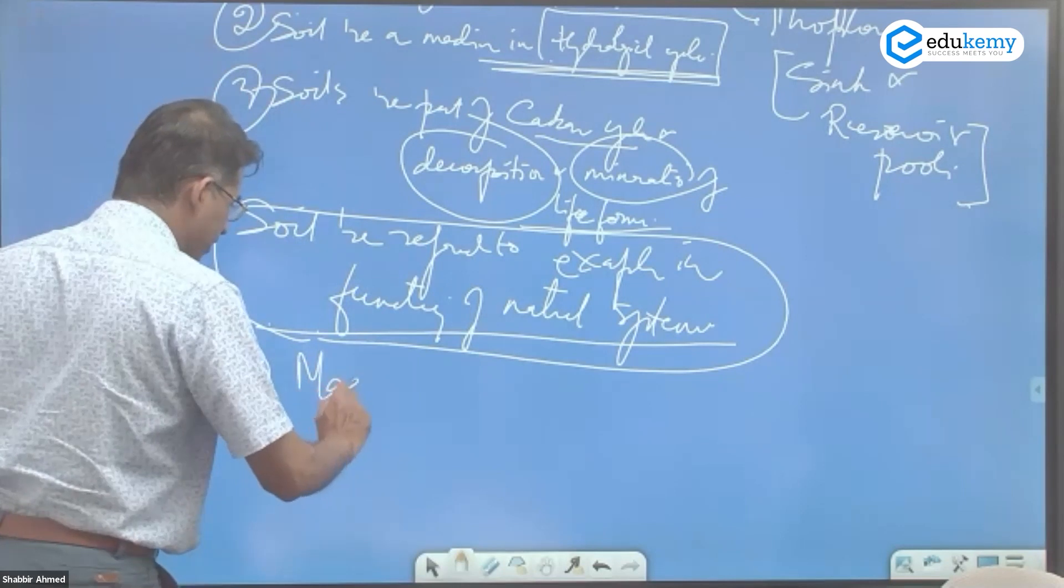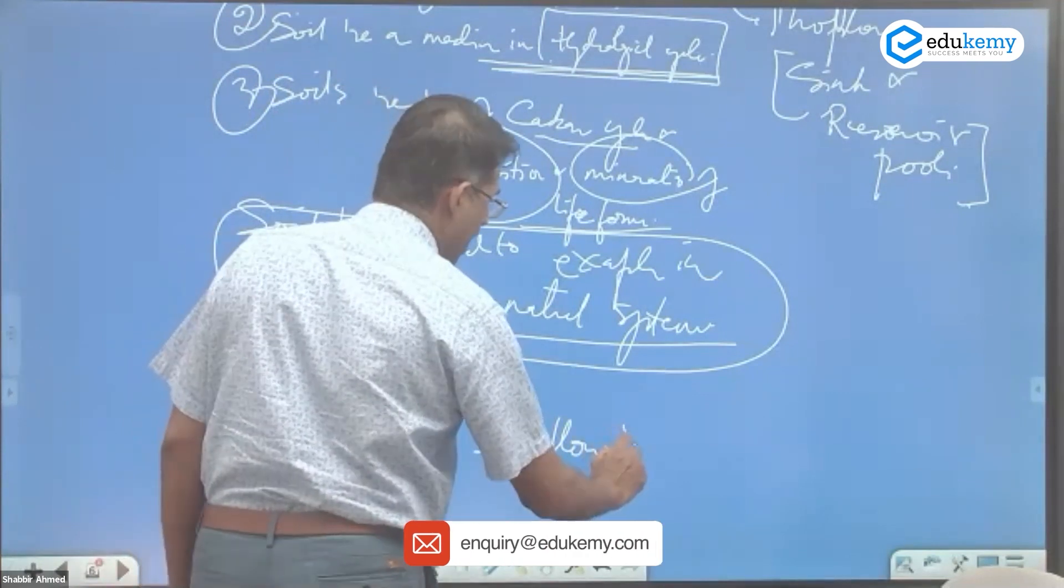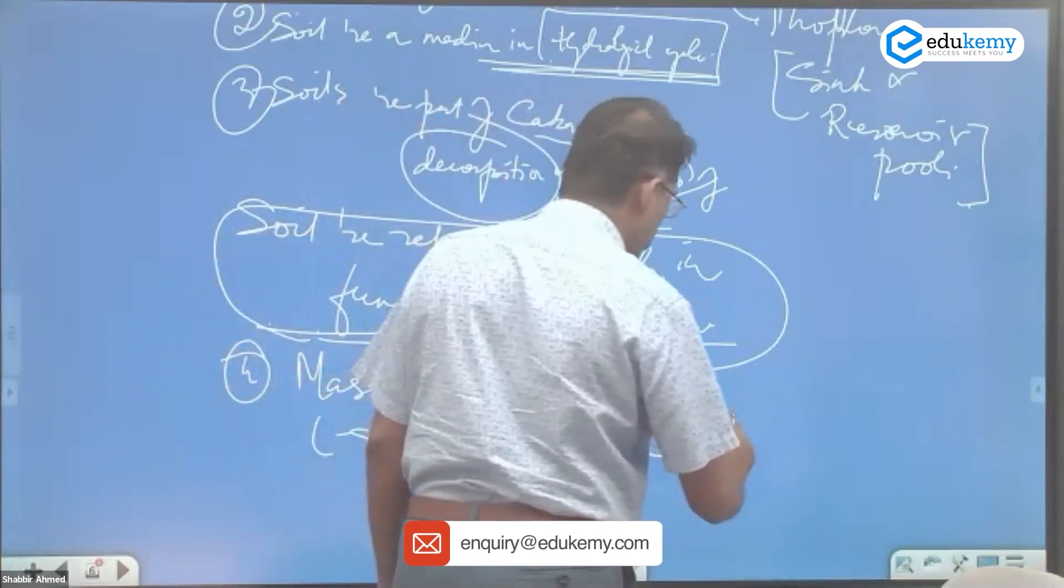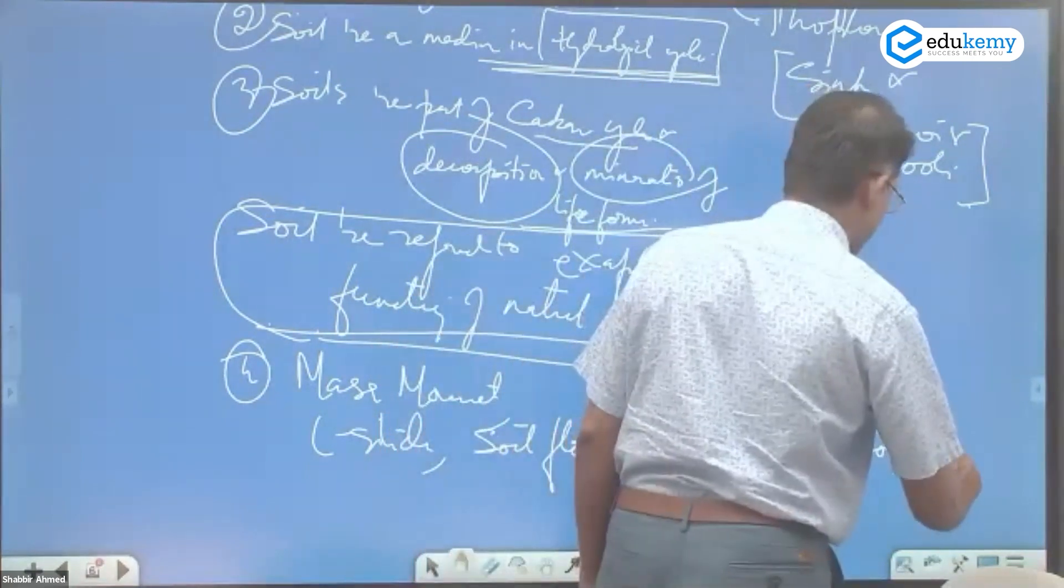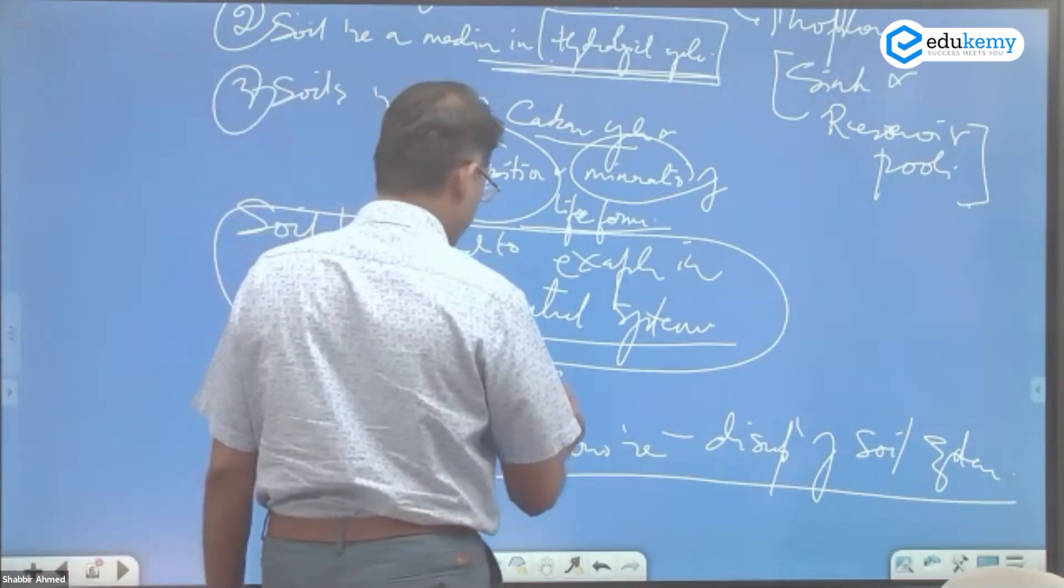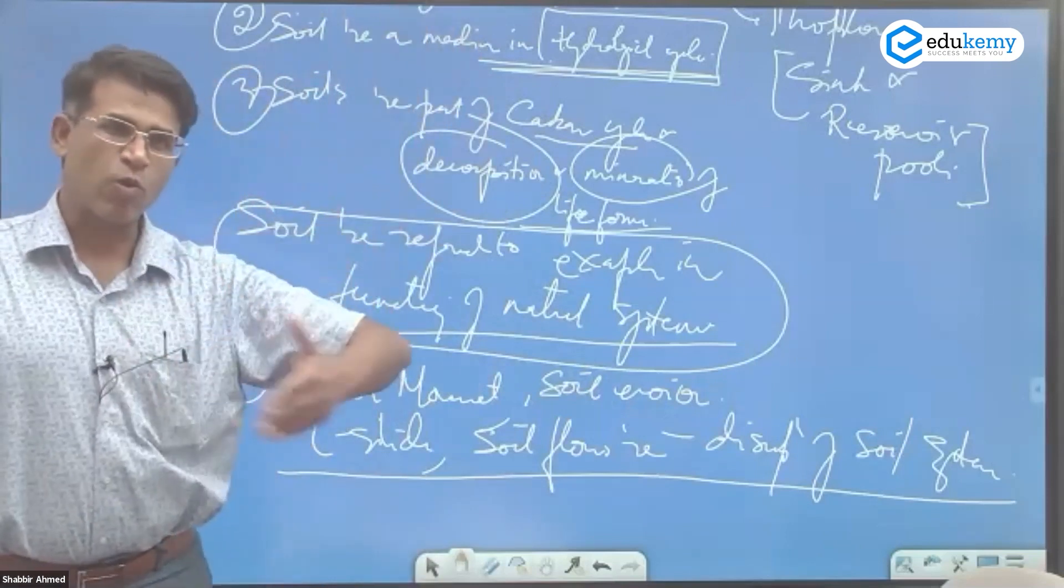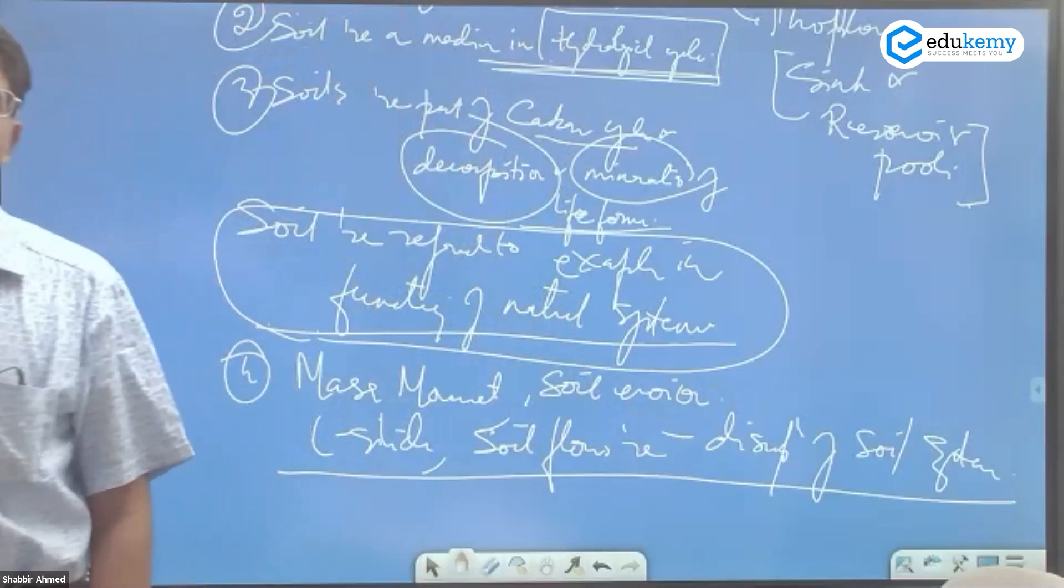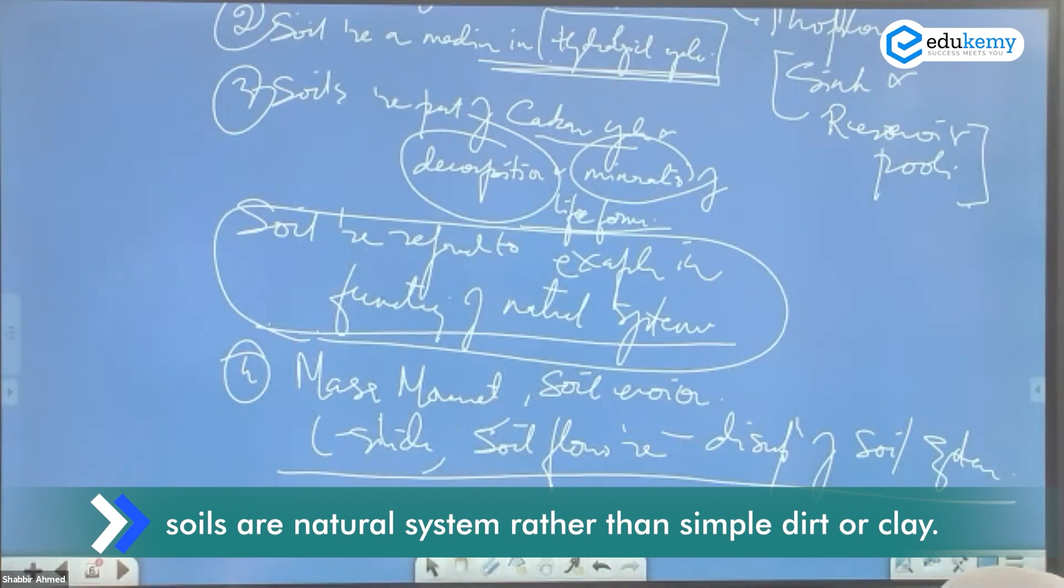Mass movement, landslides, soil flows are the consequence of disruptions of natural soil systems. In fact, also add soil erosion. What happens in soil erosion? The soil particle gets washed away. Why? Some natural system has been disrupted. So mass movements, landslides, debris flow, rock slides, soil flows - all of that are disruptions of the soil systems.